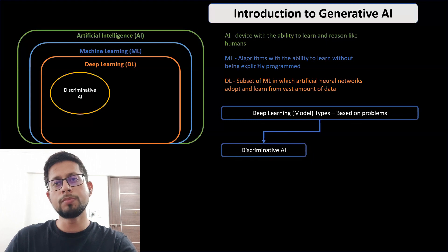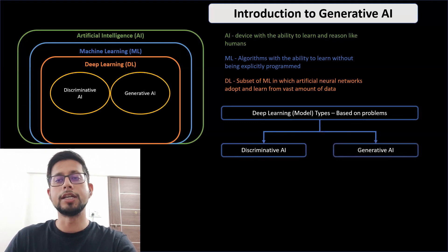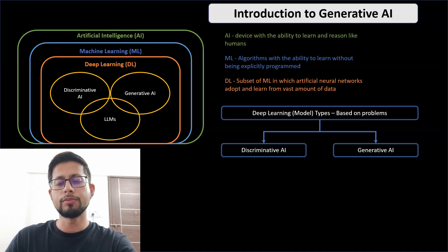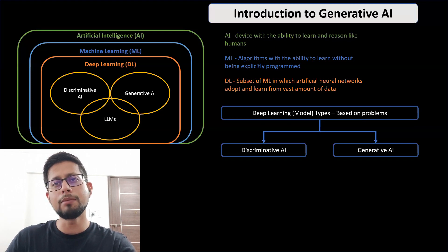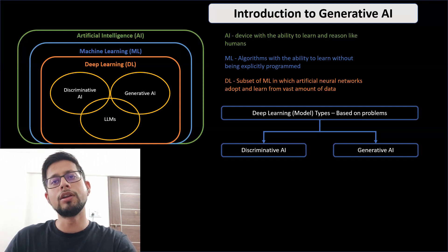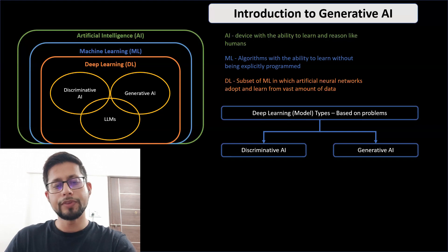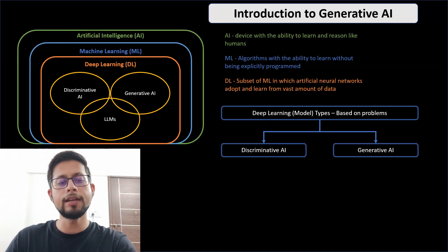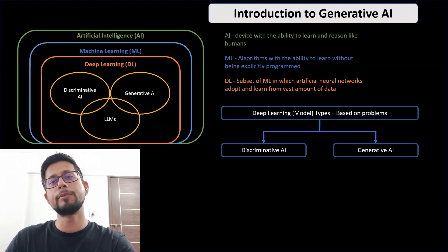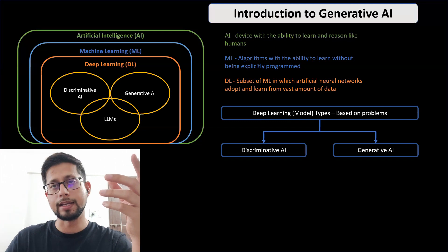We can categorize deep learning models into two basic categories: discriminative AI and generative AI. LLMs — large language models — are also part of this picture. LLMs are models trained on very large amounts of data with huge computational power, solving a variety of problems. LLMs are part of both generative AI and discriminative AI, which we'll discuss further.